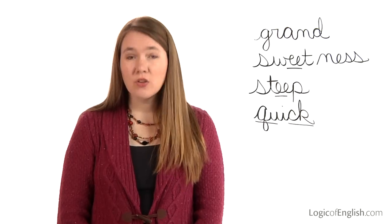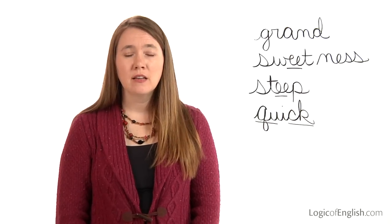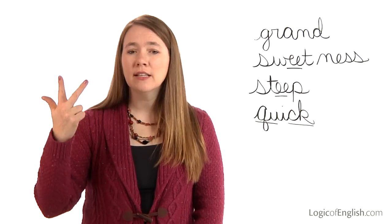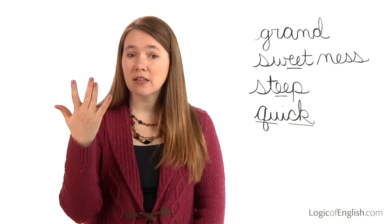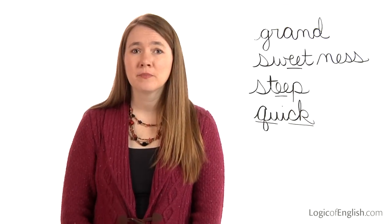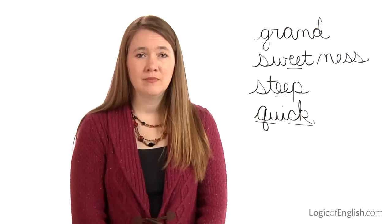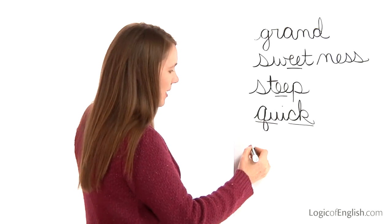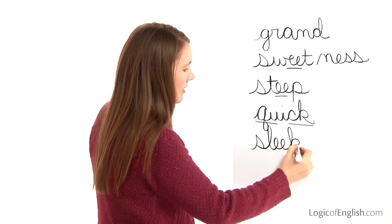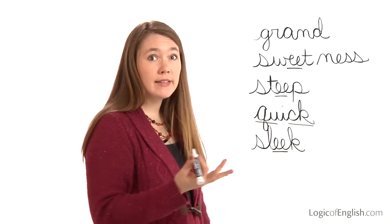The next word is sleek. The horse was sleek after all the grooming. Sleek. Let's sound it out together: S, l, e — e-double-e — k. Once again, you'll use the tall k. Go ahead and sound it out. S, l, ee, k. And how will we mark it? We'll underline the e-double-e.